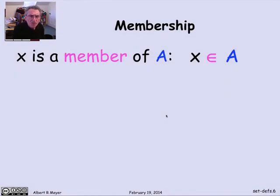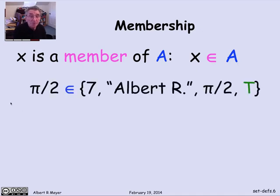The most fundamental feature of a set is what's in it. And for that, there's a special notation. We'll say that x is a member of A, where A is a set, and use this epsilon symbol to indicate membership. It's read x is a member of A. For example, pi over 2 is a member of that set that we saw before that had pi over 2 in it.